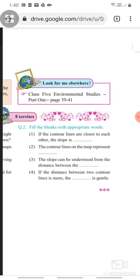Question 2 is fill in the blanks with appropriate words. First, if the contour lines are closer to each other, the slope is blank. Question 2, the contour lines on the map represent blank. Question 3, the slope can be understood from the distance between the blank. Part 4 and the last is, if the distance between two contour lines is more, the blank is gentle.